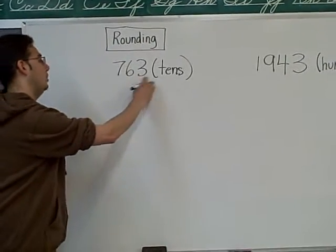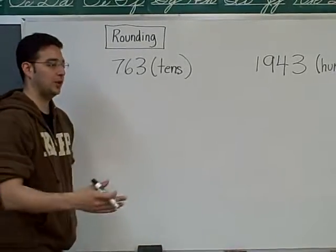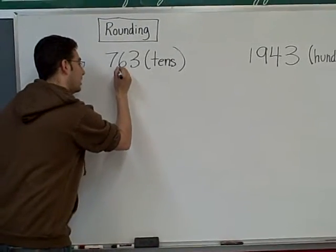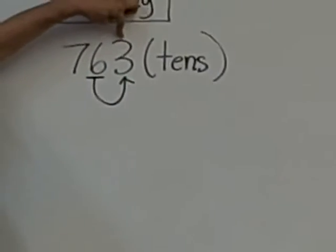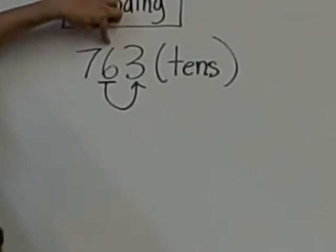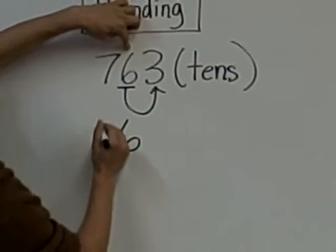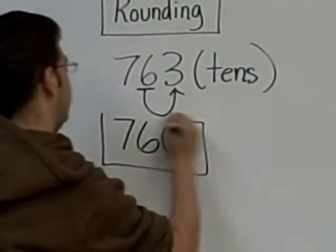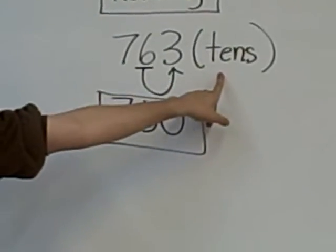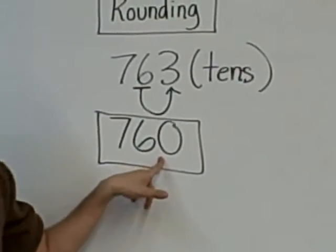So 763 rounded to the nearest tens. Here we go. Underline the place value, look next door. More than four? No, don't grow. Copy to the left and to the right zero. So 763 rounded to the nearest tens is what? 760.